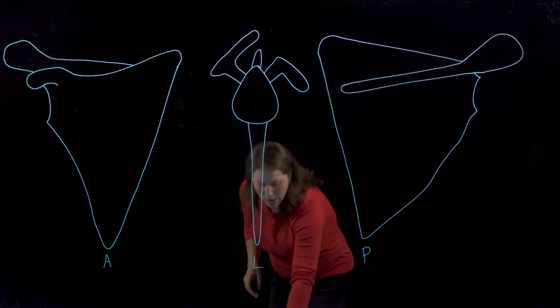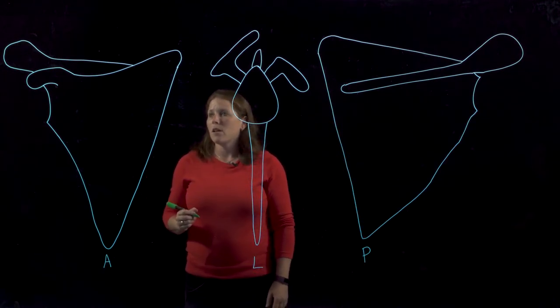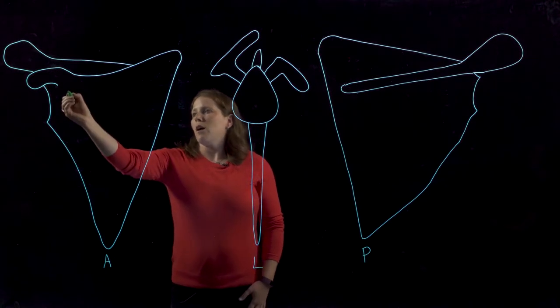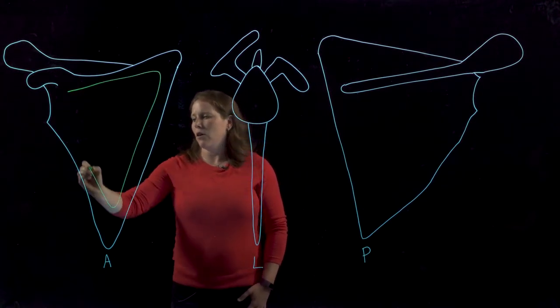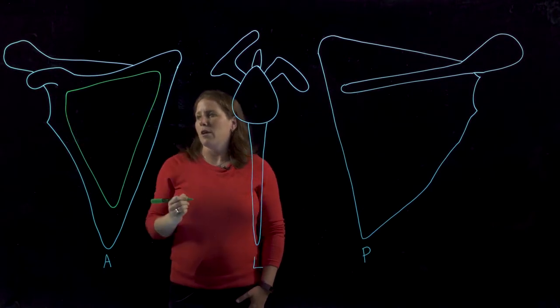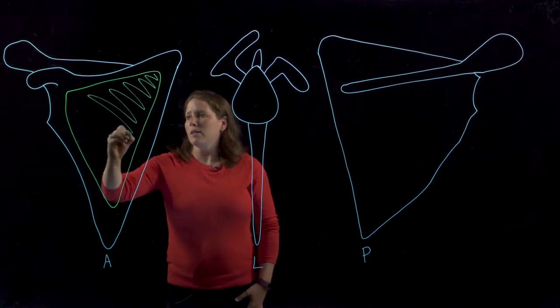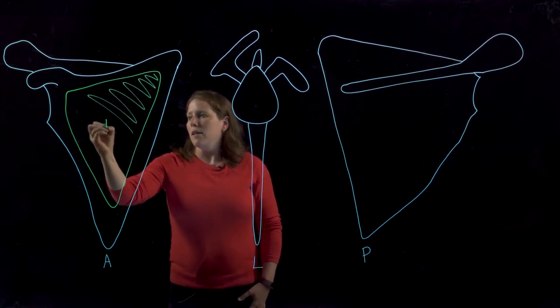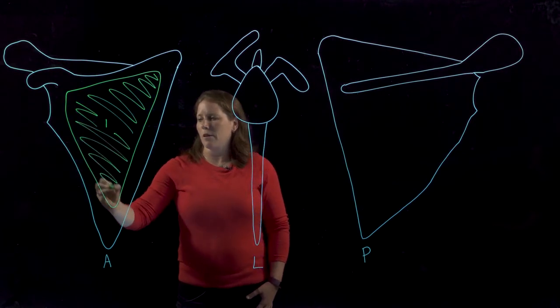I'm actually going to start with muscles that we can see attaching to the anterior surface first. So the first one, and probably the most obvious one, is that we know on this anterior surface we have this large shallow depression called the subscapular fossa, and so it should be no surprise that this is the attachment site for the muscle called subscapularis.